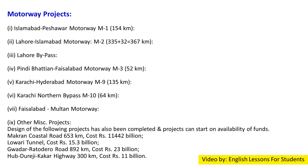Motorway projects in Pakistan include: Islamabad to Peshawar Motorway (M1), 154 km; Lahore to Islamabad Motorway (M2), 367 km; Lahore Bypass — Pindi Bhattian to Faisalabad Motorway (M3), 52 km; Karachi to Hyderabad Motorway (M9), 135 km; Karachi Northern Bypass (M10), 64 km; Faisalabad to Multan Motorway; Lahore–Sialkot Motorway; and other miscellaneous projects.